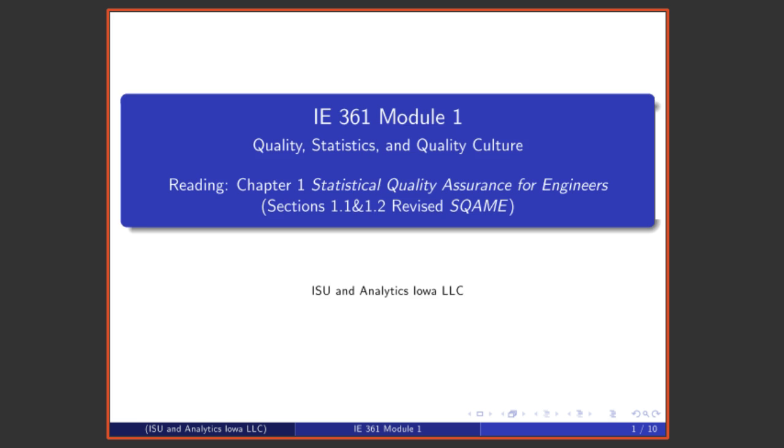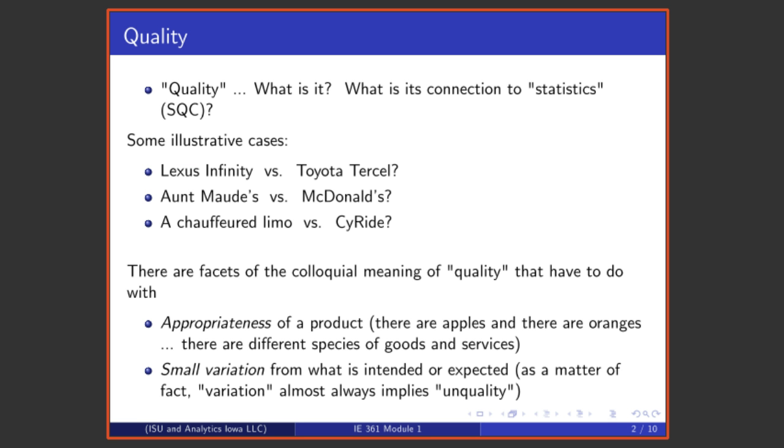Let's begin by thinking a bit about what the word quality means and consider its connection to statistics. If we're going to talk about statistical quality assurance, statistical process improvement, statistical quality control, we need some kind of understanding of what those words mean and how they're related.